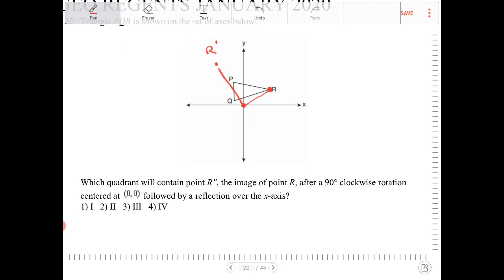And then it says, followed by a reflection over the x-axis. So a reflection over the x-axis, where am I going to end up? I'm going to end up somewhere over here. Oops. So this is going to be my R''. So which quadrant is this in?